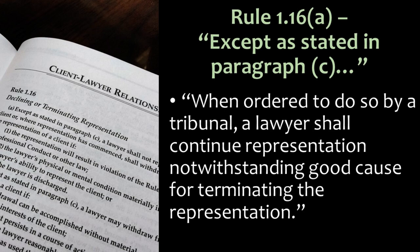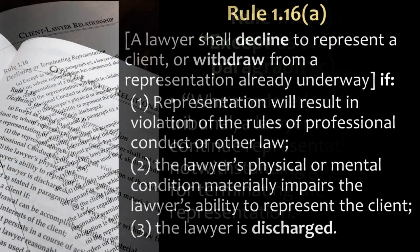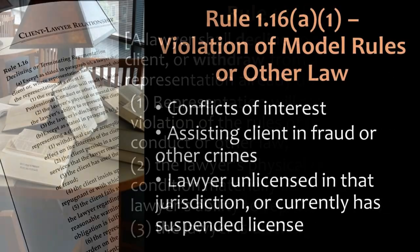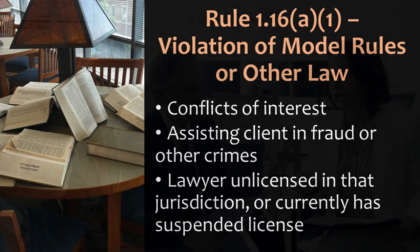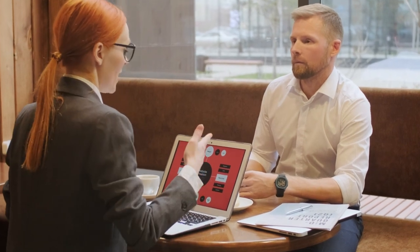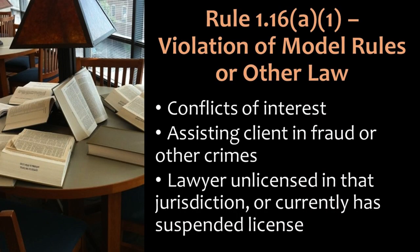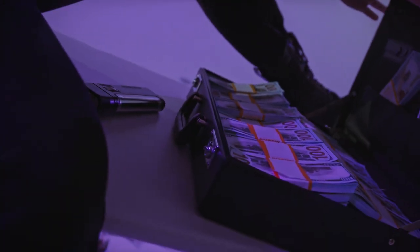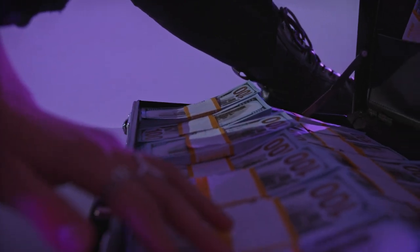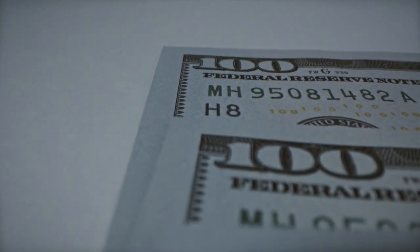Let's unpack grounds 1, 2, and 3. First, violation of model rules or other law. A very common situation is a conflict of interest. If you know you have a conflict of interest before you undertake the representation, normally you should decline to represent that person. In some circumstances, a conflict is consentable — the client can give consent — but some conflicts are not consentable. There are also rules prohibiting fraud on the court and laws prohibiting a lawyer from helping a client commit crimes or defraud other people. If a client wants help laundering money, you have to decline. If the representation is already underway and you realize the client is using your legal services for something illegal, at that point you have to withdraw.